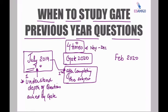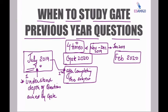The third attempt should be between November to December 2019, so that if any point is left he can revise. Finally, before February 2020 — before attempting the gate 2020 paper — a final revision of previous year gate questions in January is most important, so that the student is well-acquainted with the kind of concepts gate used to ask. So at least four times, gate previous year questions have to be solved while preparing for a gate exam.